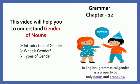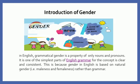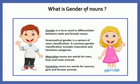In English, grammatical gender is a property of only nouns and pronouns. It is one of the simplest parts of English grammar, for the concept is clear and consistent. This is because gender in English is based on natural gender — for example, maleness and femaleness. Gender is a term used to differentiate between male and female nouns. Grammatical gender is a system of noun classification.